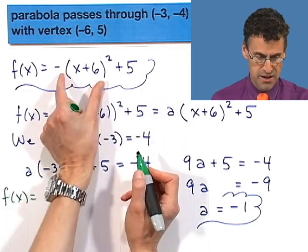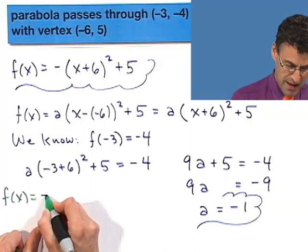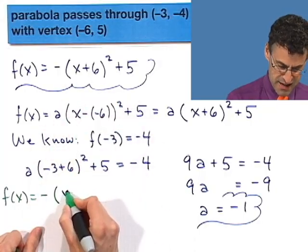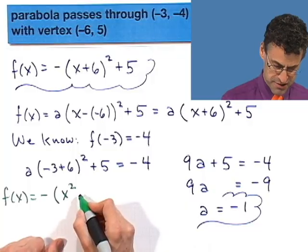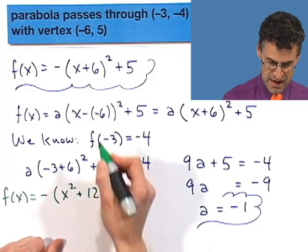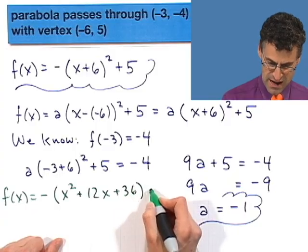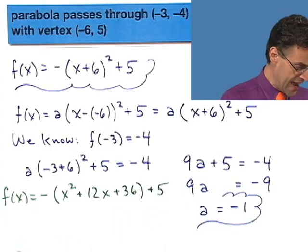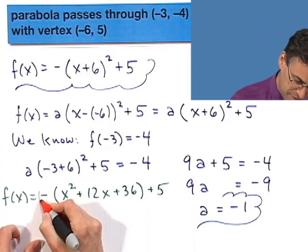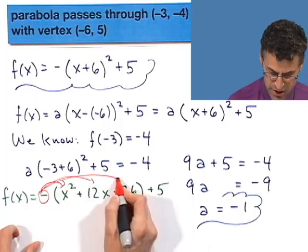So I'm just going to take this and I'm going to now just expand that, and x times x is x squared, my inner terms are going to be 6x, my outer terms are 6x, that's 12x. And then the last times the last is plus 36, and then plus 5.